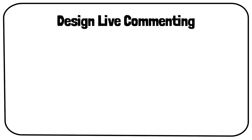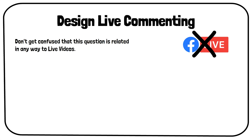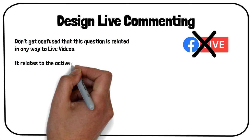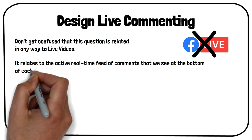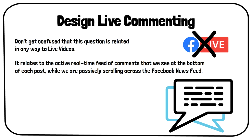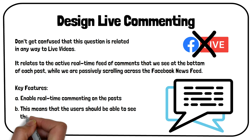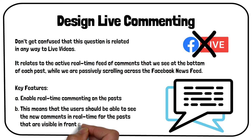Another popular system design question is to design live commenting on Facebook. This question has become more frequent in recent times. You may have heard about the recent popular feature on Facebook, which is live videos. Do not get confused — this question is related to the active real-time feed of comments that we see at the bottom of each post while we are passively scrolling across the Facebook news feed. In this question, we will be asked to design the backend of a system that can enable real-time commenting on the user's posts. This means that the user should be able to see new comments in real-time for the posts that are visible in front of their screen.